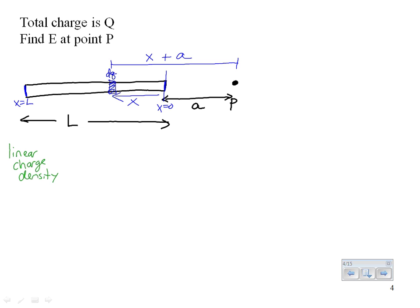We need to write dq in terms of the linear charge density. The linear charge density is the charge per unit length, given the symbol lambda (λ), reminding you it's charge per length. In this case, the charge per length is the total charge Q divided by the total length L.